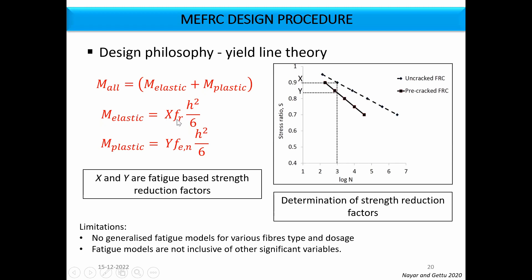For the plastic moment capacity, the pre-cracked FRC S-N curve is used with the same methodology — choose the number of repetitions expected, get the y value from the stress ratio, apply it to the equivalent flexural strength FEN, which represents the inelastic moment carrying capacity. We factor down the strength rather than directly applying to the load. This is a more inclusive method where we are directly using both the strength and the reduction factors obtained from the fatigue or monotonic flexural test of the material — using an empirical mechanistic-empirical reduction factor rather than probabilistic factors.